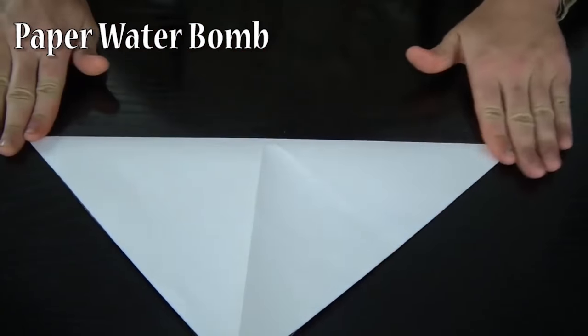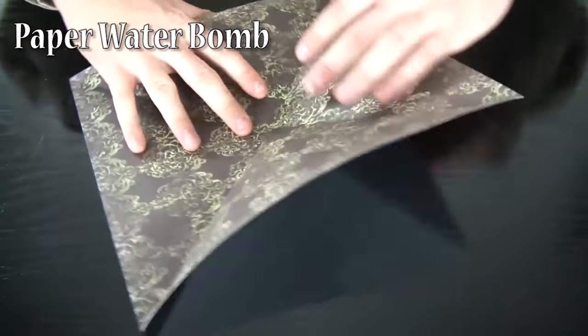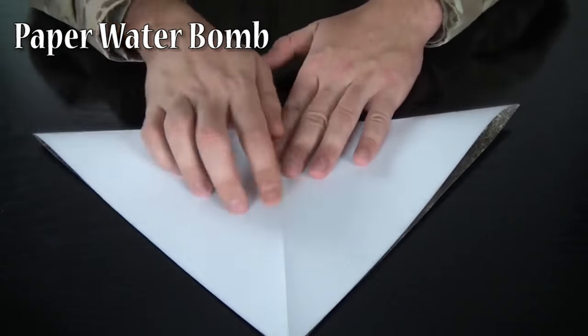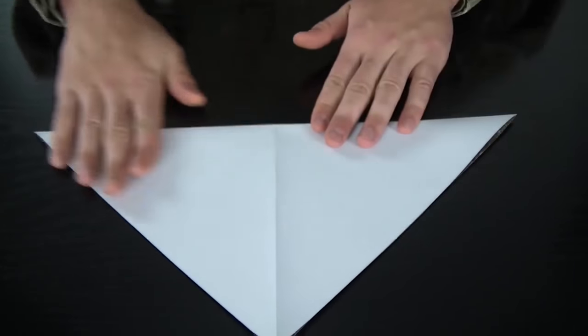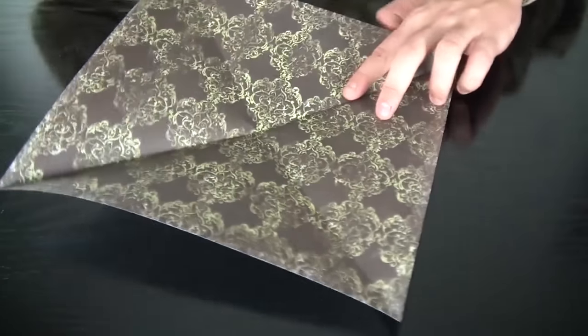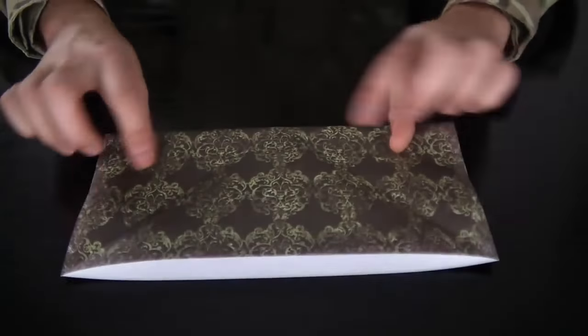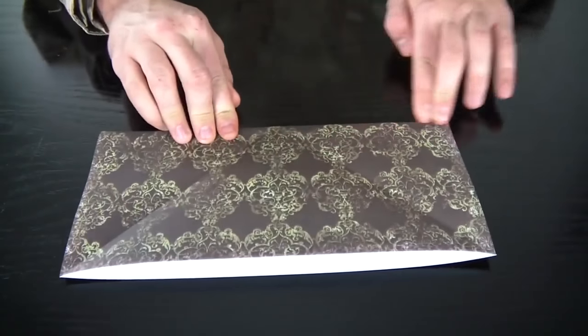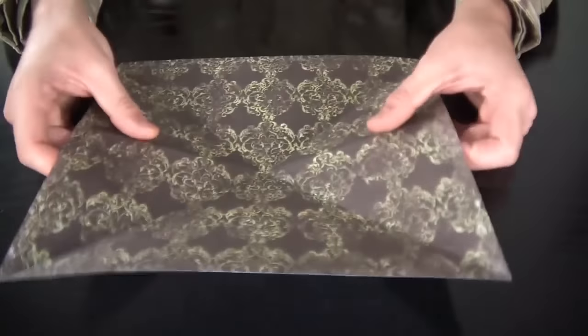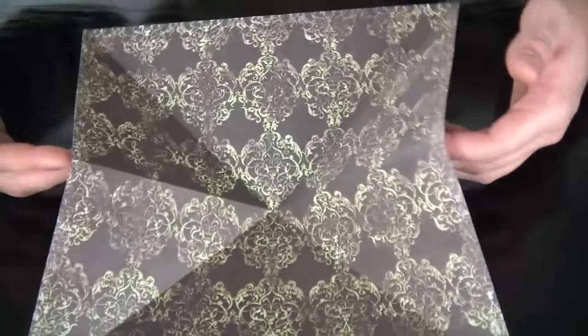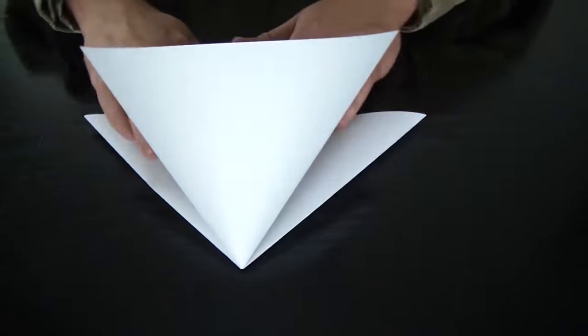First fold it in half like this, then open it. Then fold it in half like this—make sure all your creases are similar. Then turn it over and fold it in half like that. Once you're going to open it, you see how it's like folding almost by itself? Just bring these two corners together and close it.